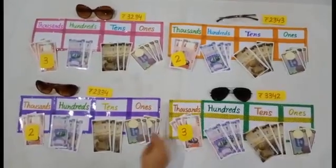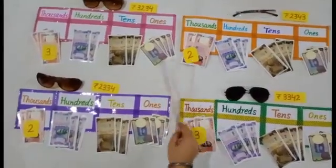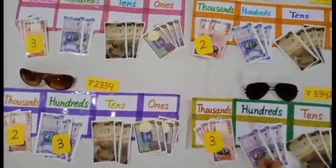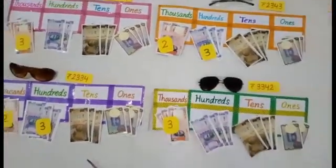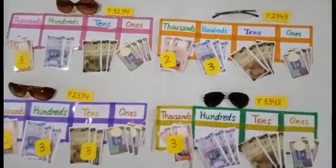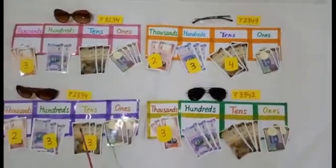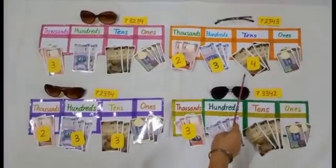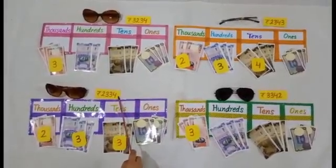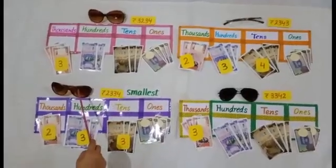2 is smaller than 3, so we move on to those two sides. Both sides have equal thousands and Rs. 300 each. Now count the tens — this side has 3 tens and this side has 4 tens. 3 is smaller than 4, so 2,334 is the smallest number and this goggle is the cheapest.